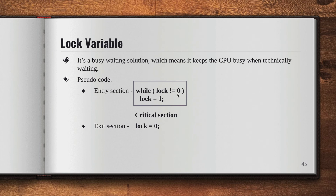Once P1 finishes, it sets the lock value to zero and exits the critical section. Because the lock value becomes zero, the condition becomes false and P2 exits the loop, sets the lock value back to one, and enters the critical section. Once P2 finishes its execution, it sets the lock value to zero, and P3 follows the same process.